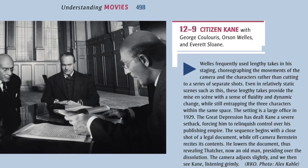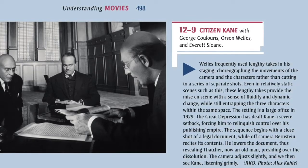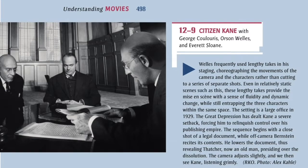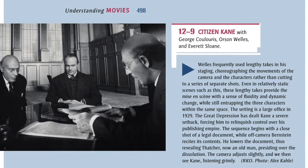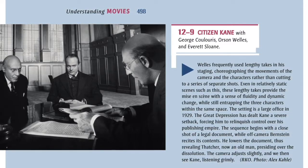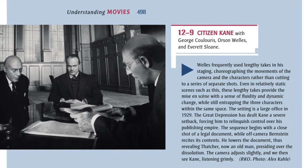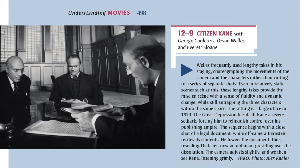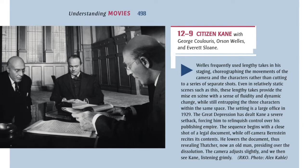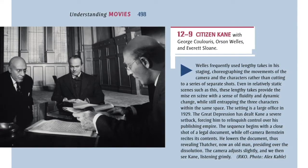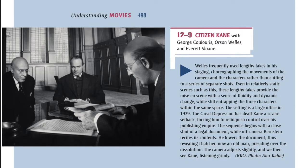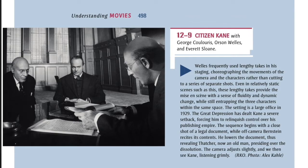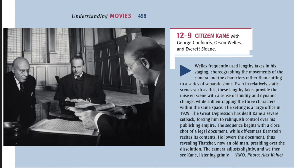Even in relatively static scenes such as this, these lengthy takes provide the mise-en-scene with a sense of fluidity and dynamic change, while still entrapping the three characters within the same space. The setting is a large office in 1929. The Great Depression has dealt Kane a severe setback, forcing him to relinquish control over his publishing empire. The sequence begins with a close shot of a legal document, while off-camera Bernstein recites its contents. He lowers the document, thus revealing Thatcher, now an old man, presiding over the dissolution. The camera adjusts slightly, and we then see Kane, listening grimly.